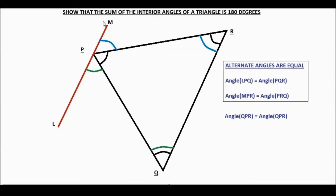Now LM is parallel to QR. If PQ is thought of as a transversor cutting through both of these parallel lines, then the alternate angles must be equal. The angles LPQ and PQR are equal — this angle and this angle. Likewise, angle MPR and angle PRQ are equal — this angle and this angle. They are alternate angles which are equal.